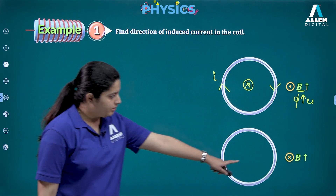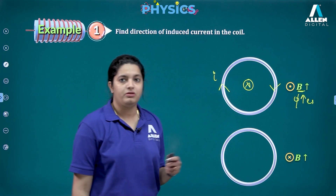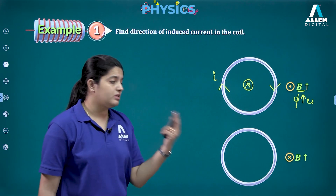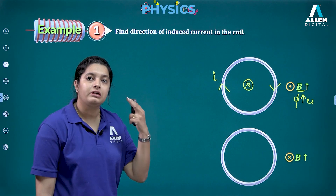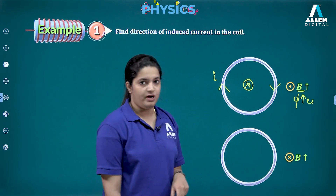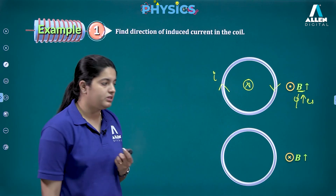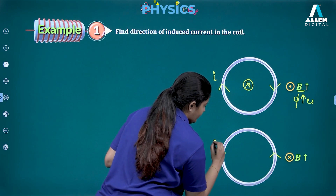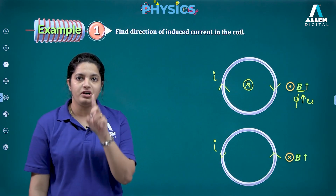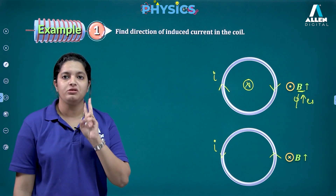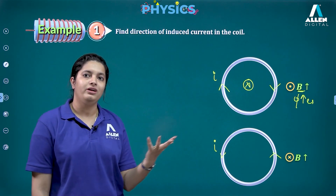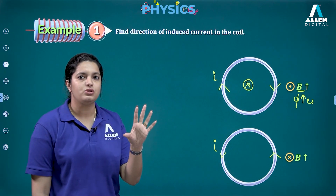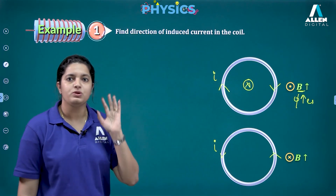In the second case, the magnetic field is into the board (crosses) and is increasing. The flux is increasing in the inward direction, so the induced current must reduce it by producing flux outward. Using the right-hand thumb rule with thumb outward, the direction of induced current is anticlockwise. Two steps to follow: first check the direction of magnetic field, then check the nature of change in flux, then apply the right-hand thumb rule.